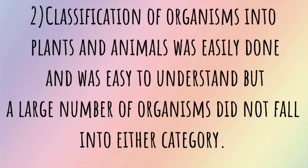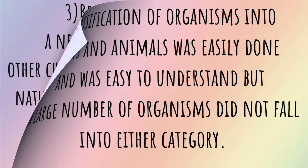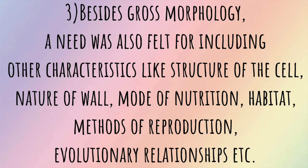Classification of organisms into plants and animals was easily done and easy to understand, but a large number of organisms did not fall into either category. Besides gross morphology, a need was also felt for including other characteristics like structure of the cell, nature of wall, mode of nutrition, habitat, methods of reproduction, evolutionary relationships, etc.